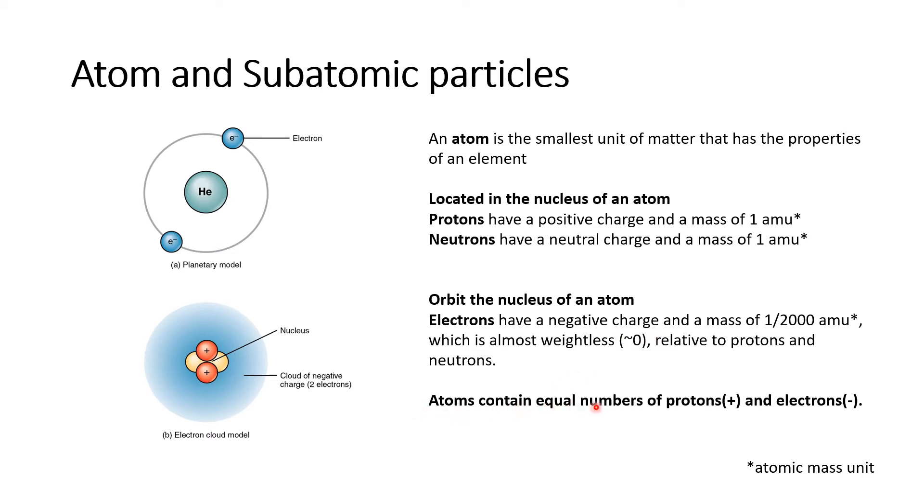Atoms contain equal numbers of protons and electrons. So the protons in the nucleus equal the electrons in the energy levels or orbitals.